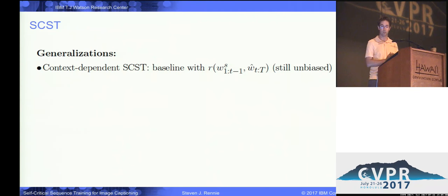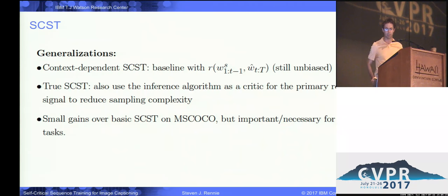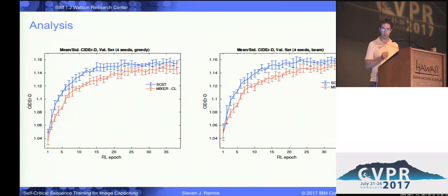The technique can be generalized in several ways. For example, you can do context-dependent self-critical sequence training, where you baseline dependent on the context of the previous samples and then run the inference algorithm for the suffix of the sentence. You can also make it a true actor-critic algorithm by using it as the primary reward signal. In general these generalizations are important, but on MS-COCO they only gave a very small gain.